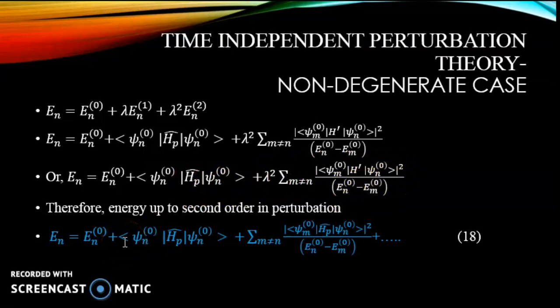Therefore, we have energy up to the second order in perturbation given by this expression: E_n equal to E_n^(0) the unperturbed eigenenergy plus ⟨ψ_n^(0)|H_p|ψ_n^(0)⟩ plus this summation term.